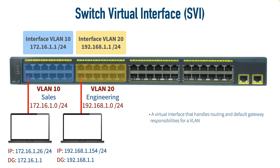Since this allows forwarding decisions based on Layer 3 information, it won't be supported on a Layer 2 switch. In this example, if our sales PC wanted to reach the engineering PC, it would send traffic destined for its default gateway of 172.16.1.1. Interface VLAN 10 is the ingress port, and the switch sees the destination is the 192.168.1.0/24 network, which is available out of interface VLAN 20 — the egress virtual interface — directing traffic into VLAN 20 and to the PC there. That's how inter-VLAN routing works with SVIs.